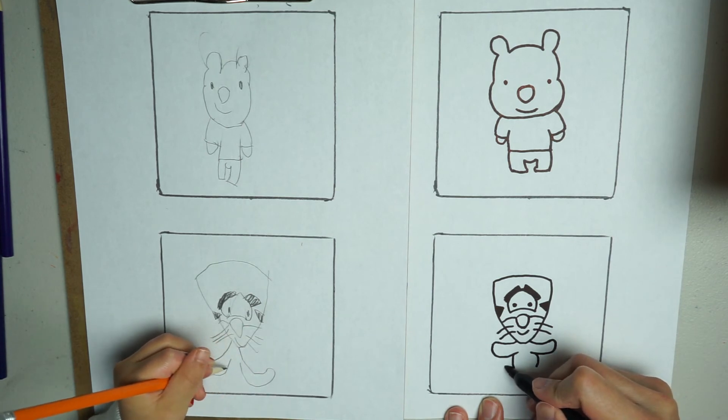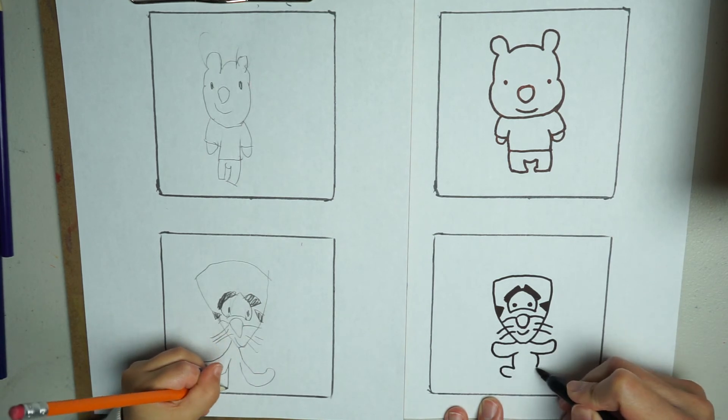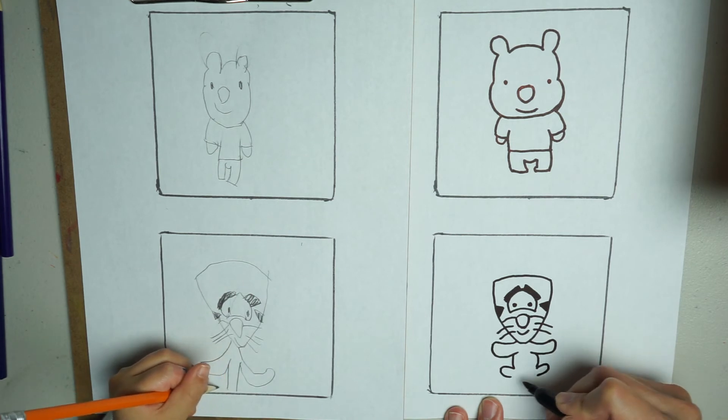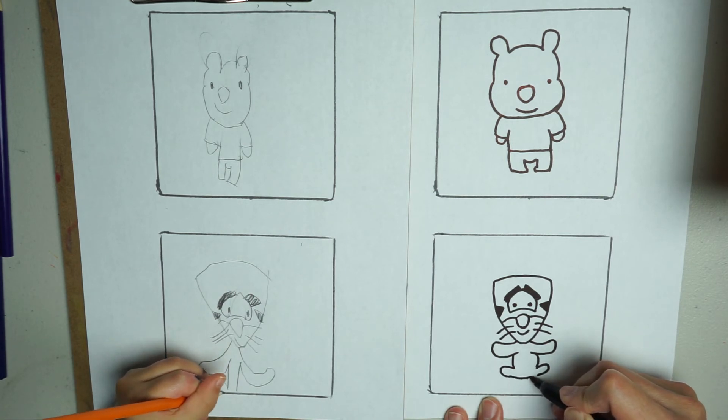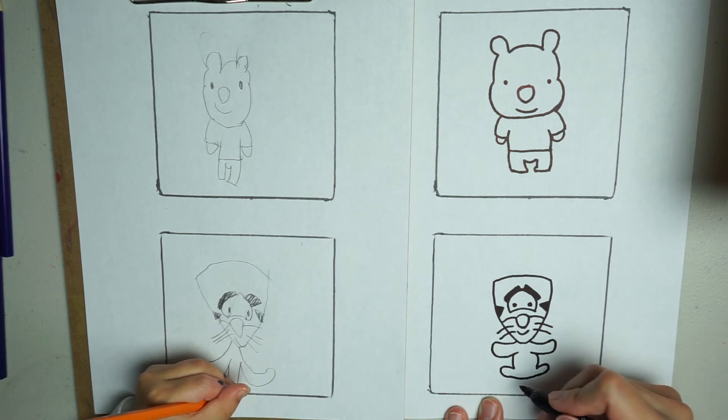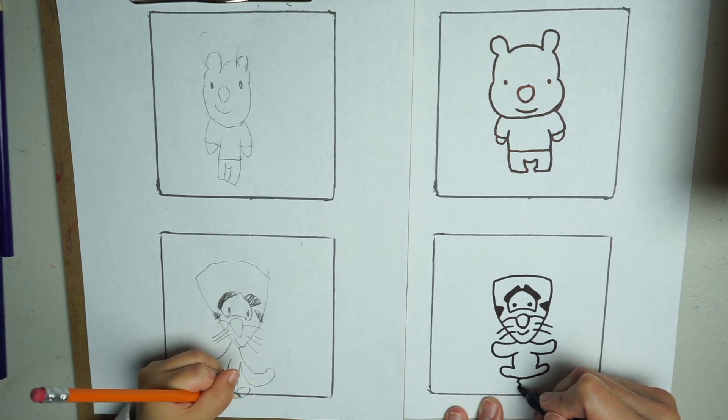His legs go out this way. It will be small in his arms. Then we are going to connect his legs together. And his tail is zig-zag.